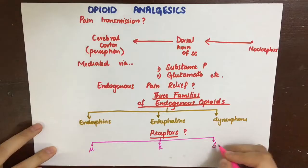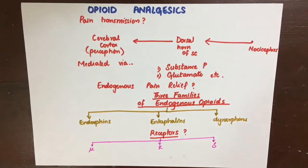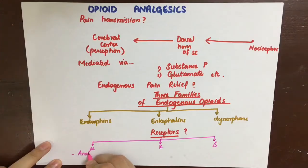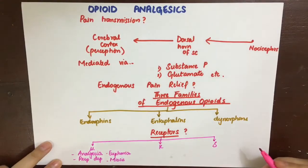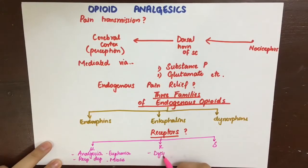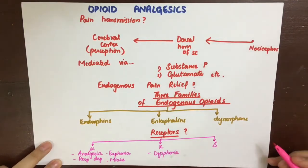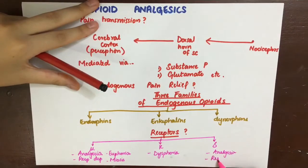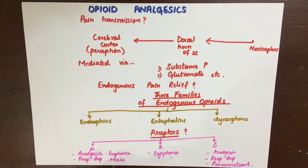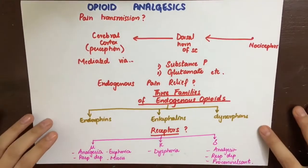The three major receptor classes are termed mu, kappa, and delta. The mu receptor is mainly associated with analgesia at both spinal and supraspinal levels, respiratory depression, dependence, sedation, euphoria, miosis, and decreased GI motility. The kappa receptor has all these properties except euphoria — it causes dysphoria, a state of unease or unhappiness. The delta receptor has all these properties and additionally has a pro-convulsion property.